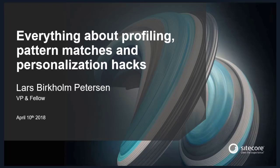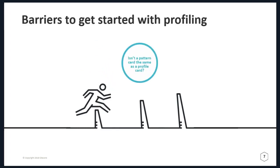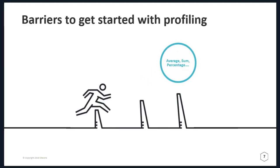The first barrier is typically our naming convention. When we try to explain profiling, we have to explain a lot of different names and introduce how they are all related: the profile, profiling, profile cards, profile users, profile keys, and so forth. That definitely adds to the confusion. Another barrier is understanding the difference between profile cards and pattern cards, and what to use — average, sum, or percentage.